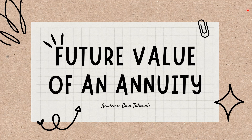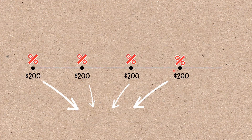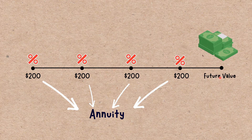What is the future value of an annuity? The future value of an annuity is the value of a group of recurring payments at a certain date in the future, assuming a particular rate of return or discount rate. The higher the discount rate, the greater the annuity's future value. As long as all of the variables surrounding the annuity are known — such as payment amount, projected rate, and number of periods — it is possible to calculate the future value of the annuity.